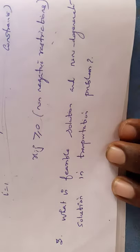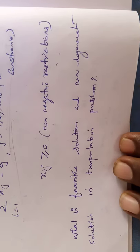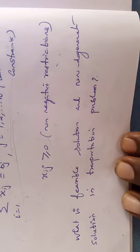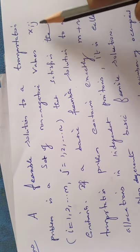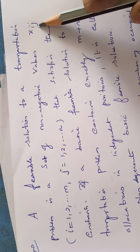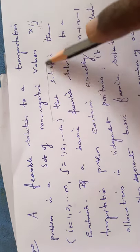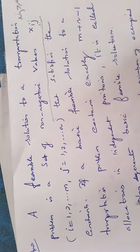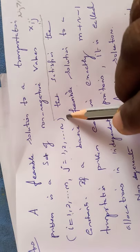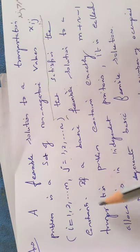Question number 3: What is the feasible solution and non-degenerate solution in a transportation problem? The feasible solution consists of all non-negative values x_ij, where all x_ij ≥ 0 for i = 1 to m and j = 1 to n, satisfying the constraints.